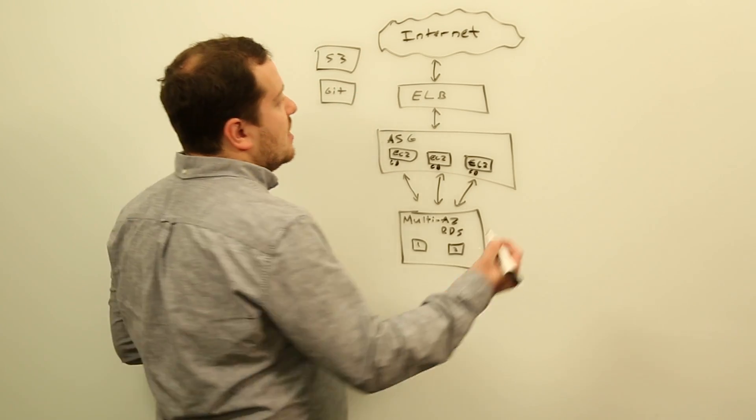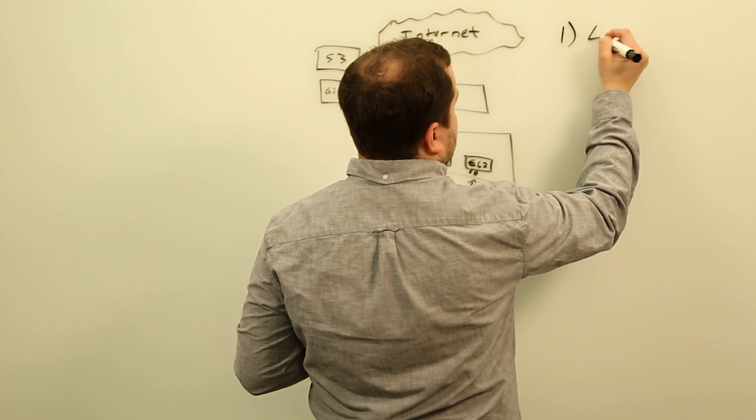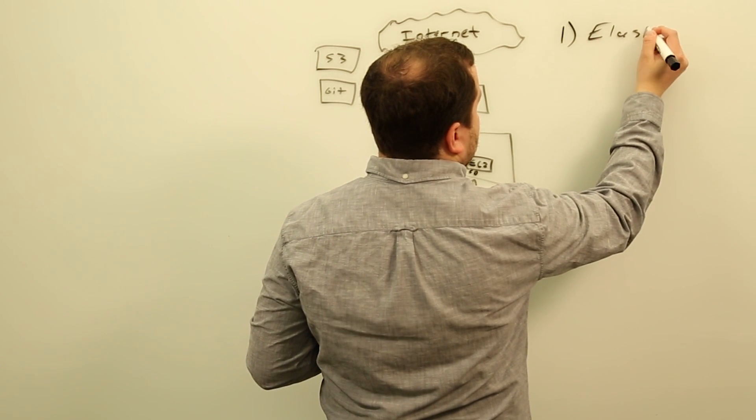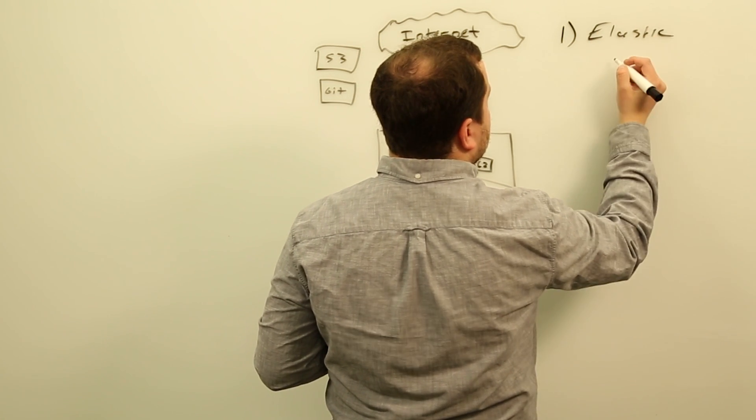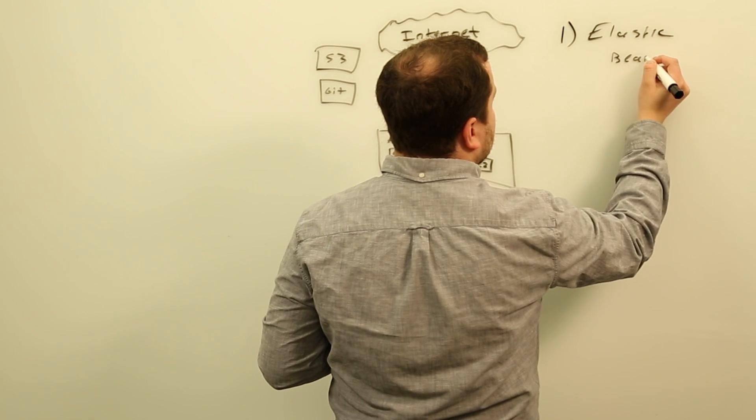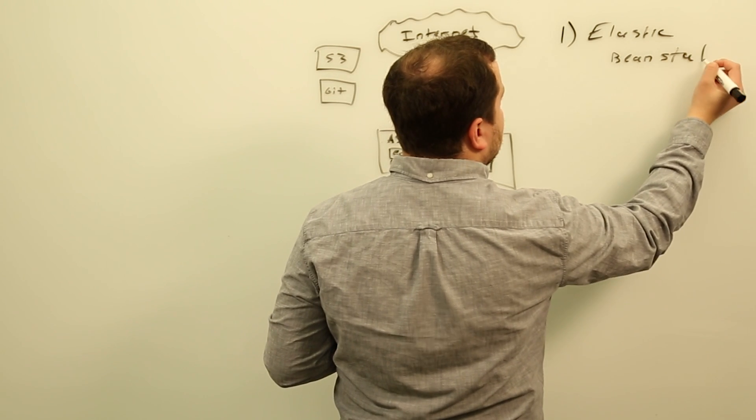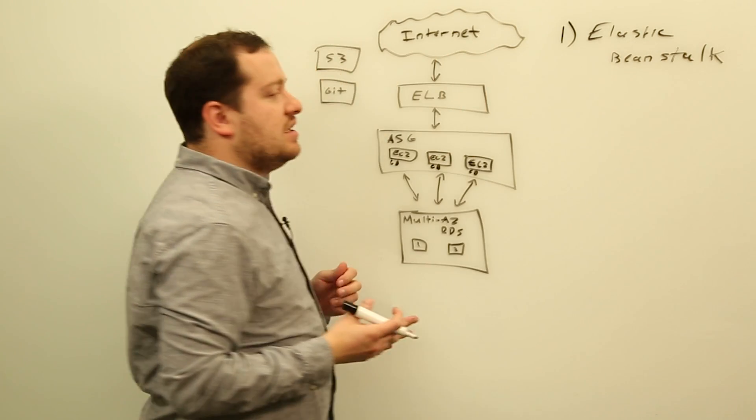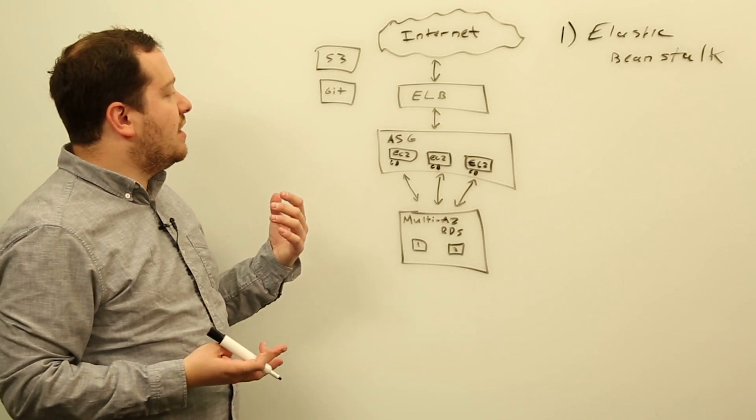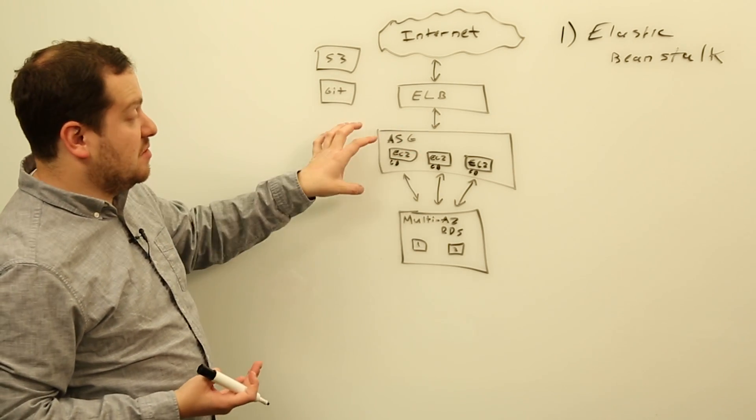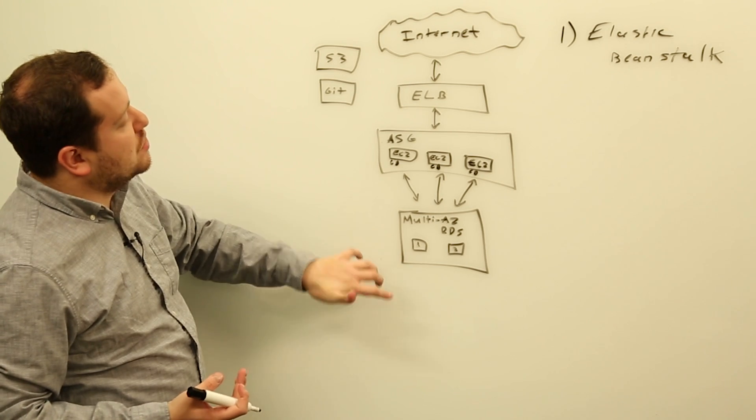There's three options. The first option is Elastic Beanstalk. So AWS Elastic Beanstalk will allow you to actually not only just deploy code, but provision all of this infrastructure.